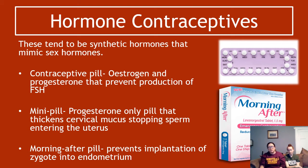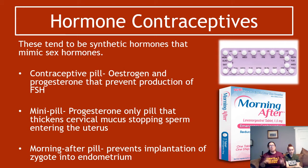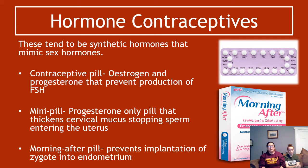The mini pill is only made of progesterone and it thickens cervical mucus. If the cervix is blocked by really thick mucus, that stops sperm getting from the vagina through the cervix into the uterus. The morning-after pill prevents implantation of the zygote into the endometrium — it prevents the fertilised ova from attaching so it goes through the normal menstrual cycle route. Many conservative religious groups have an issue with it because they consider it a tiny abortion, as conception has effectively occurred.